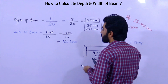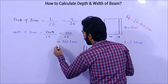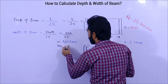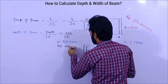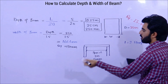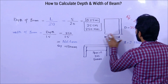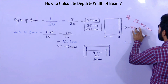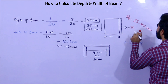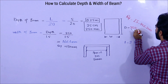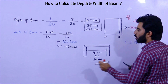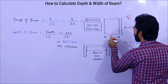So the required width of the beam should be approximately 170 millimeters, or 17 centimeters. To summarize: the depth is 250 mm and the width should be 170 millimeters.